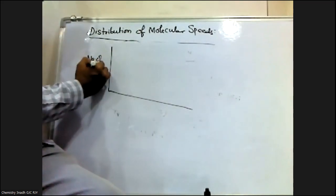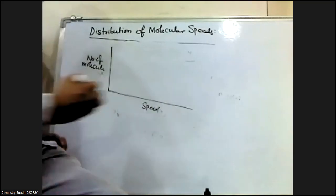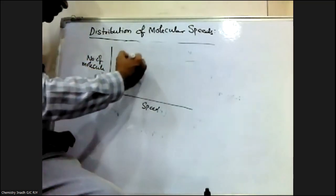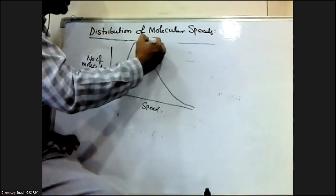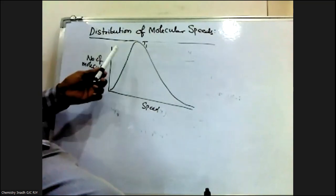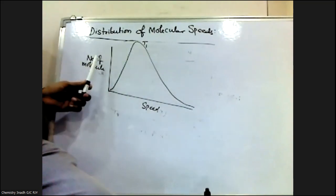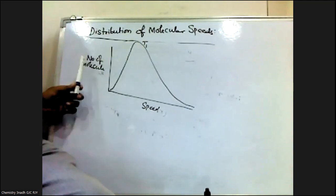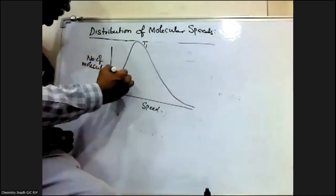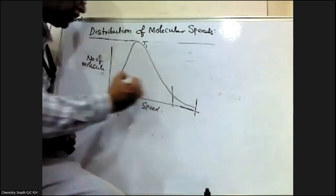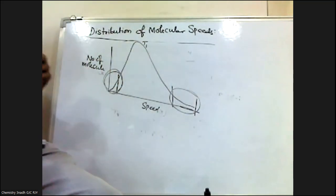If we plot number of molecules on the y-axis versus speed on the x-axis, at a particular temperature T1, we get a characteristic curve. What we can observe from this plot — it corresponds to number of molecules versus molecular speeds — is that some molecules have very low speed and some have very high speed.